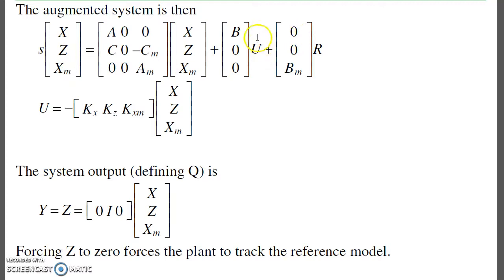The input affects the plant through the B matrix, the setpoint affects the reference model through its B matrix, and the servo compensator sees the difference between Y and Y model.